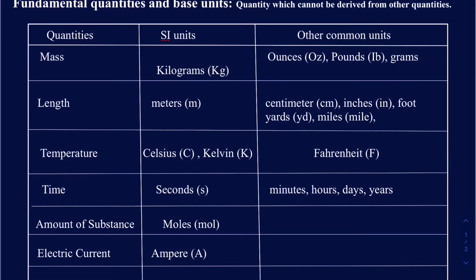Let's start with mass. The SI unit — the System of International Units — for mass is actually the kilogram. Even though 'kilo' is just a prefix, the base unit is the gram. But the SI unit for mass is always the kilogram. Other common units for mass include ounces, pounds, and grams — the symbol for grams is a lowercase g.